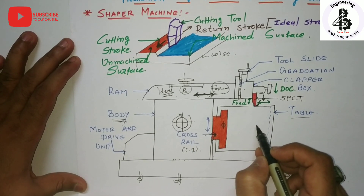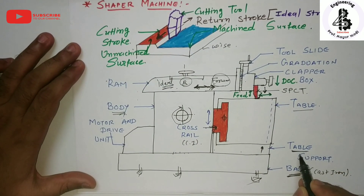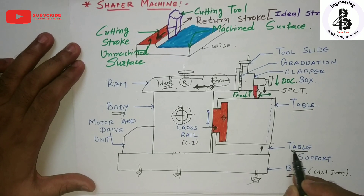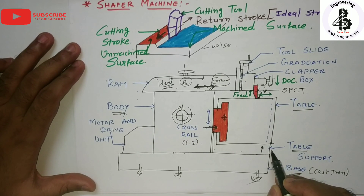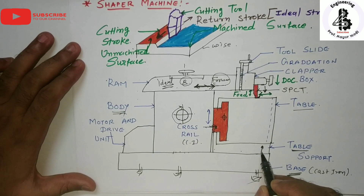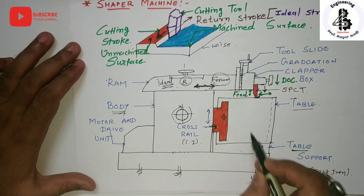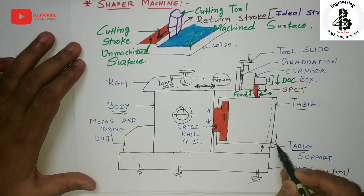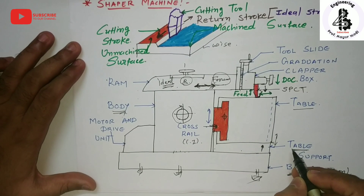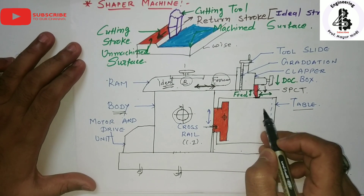The table is a box-type cast iron component used to hold the workpiece with the help of work-holding devices. It is bolted to the saddle to receive crosswise and vertical movement from the saddle, so you can easily adjust the height of the table and position the workpiece relative to the cutting tool of the shaper machine.